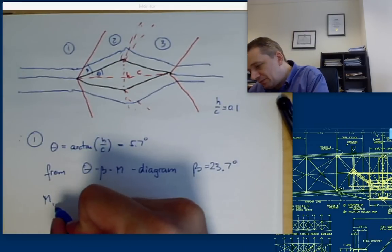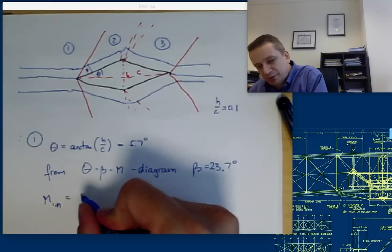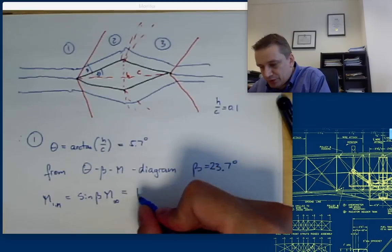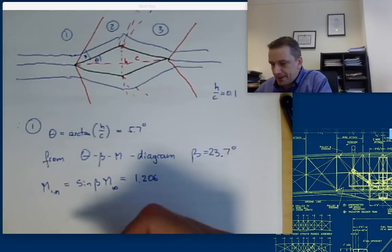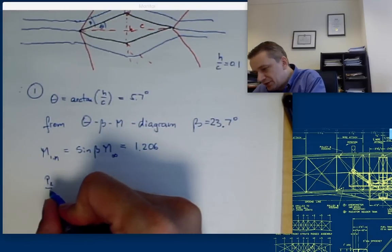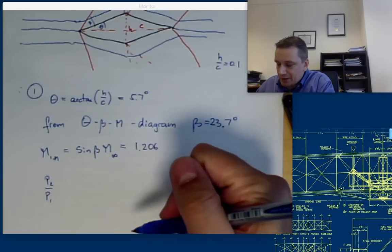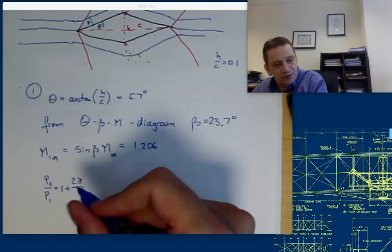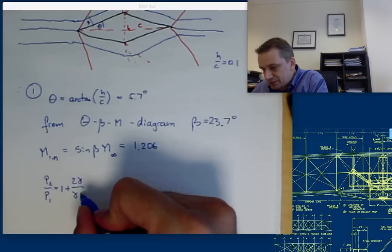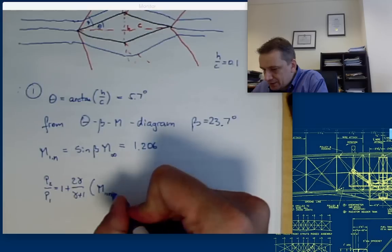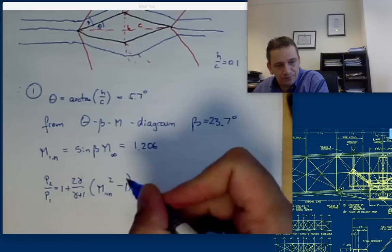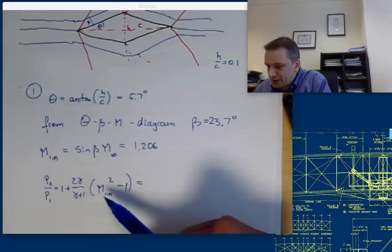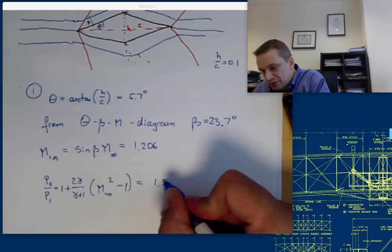I'm not going to use that from now on. Okay, so M1N, the normal Mach number, is then going to be sine beta times M infinity, that's 1.206. I can then determine the pressure jump from my shock relations. P2 over P1 is 1 plus 2 gamma over gamma plus 1, M1N squared minus 1. Okay, I'll put in here the normal Mach number, my gamma, and then I'm going to get 1.53.